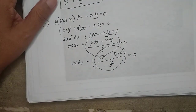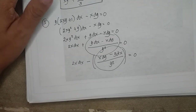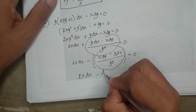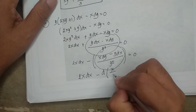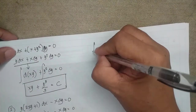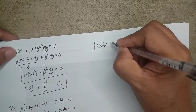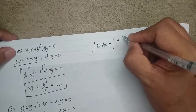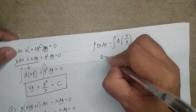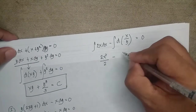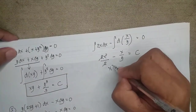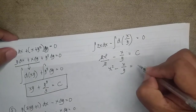This falls under integrating factor determined by inspection formula number two. So we have 2x dx minus d(x/y) = 0. To get the solution, we integrate: 2x dx minus d(x/y) = 0, giving 2x²/2 minus x/y = 0, or x² minus x/y = 0.